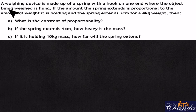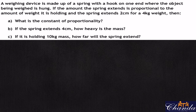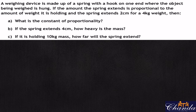This question says: a weighing device is made up of a spring with a hook on one end where the object being weighed is hung. The amount the spring extends is proportional to the weight it is holding. The spring extends 2 centimeters for a 4-kilogram weight. What is the constant of proportionality? If the spring extends 4 centimeters, how heavy is the mass? If it is holding 10 kilograms, how far will the spring extend?